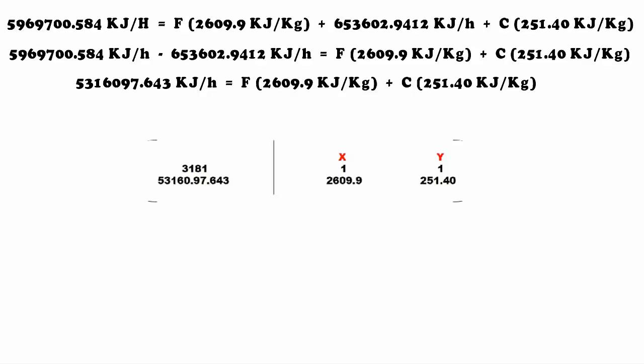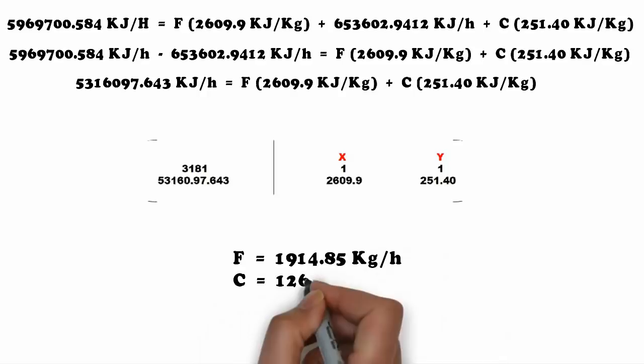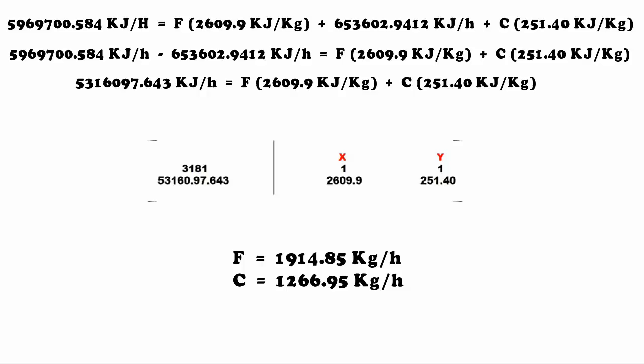Solving the system of equations, we get F = 1914.85 kg/h, while C gives a result of 1266.95 kg/h.